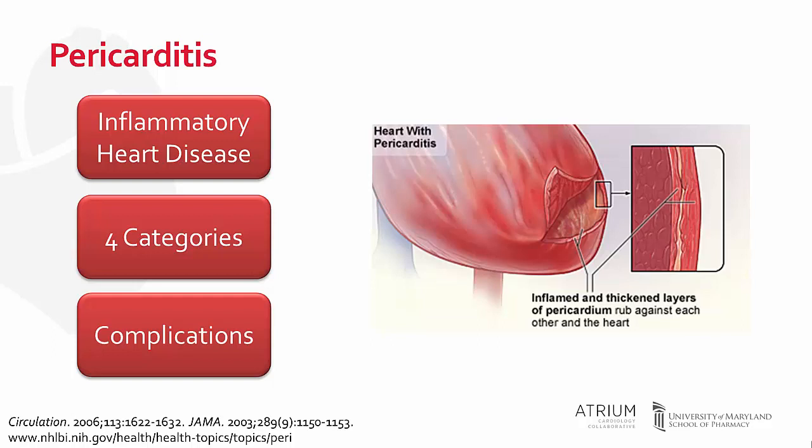Cardiac tamponade occurs from a chronic or acute accumulation of fluid in the pericardial cavity, where the pericardium becomes stiff and high intrapericardial pressures result in compression of the cardiac chambers and hemodynamic instability.